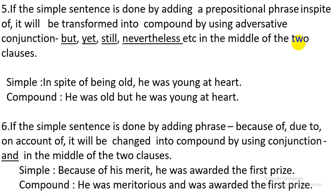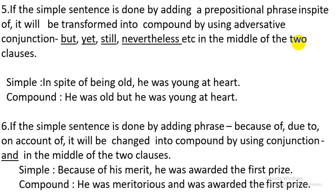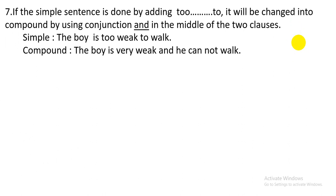Serial number six: if the simple sentence is done by adding a phrase such as 'because of', 'due to', or 'on account of', it will be changed into a compound sentence by using conjunction 'and' in the middle of the two clauses. Simple sentence: 'Because of his merit, he was awarded the first prize.' Here you bring the subject to the beginning, use 'was', change 'merit' into the adjective 'meritorious', and use 'and'. The compound sentence is: 'He was meritorious and was awarded the first prize.'